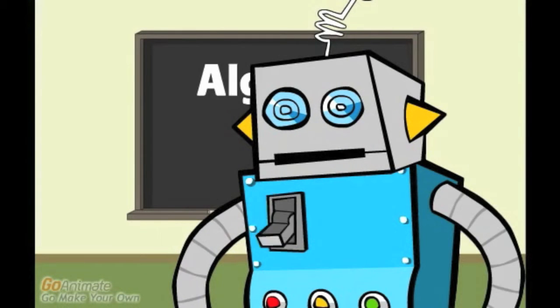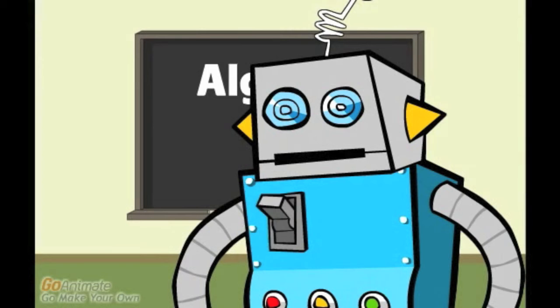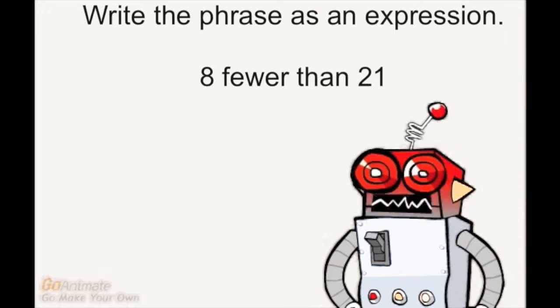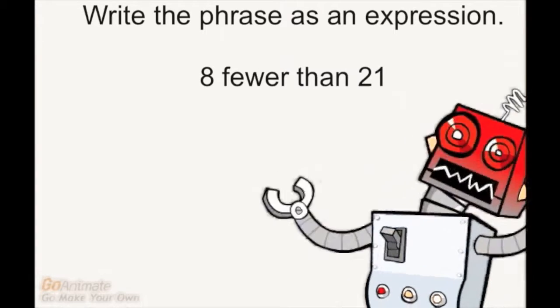Algebra is easy for me because it is just numbers, symbols and rules. Robots are good at following rules. But I am so terrible at interpreting English.